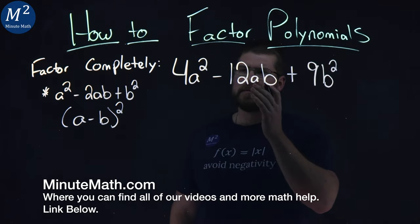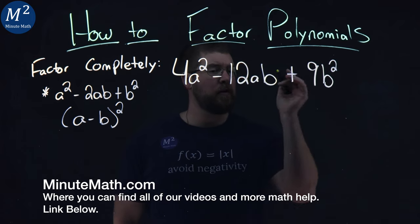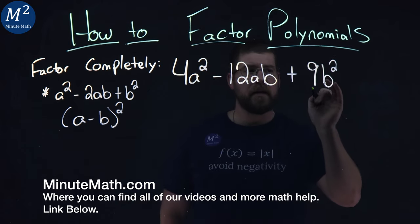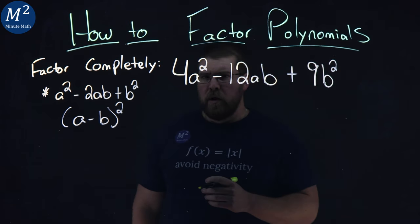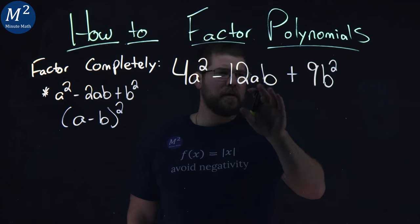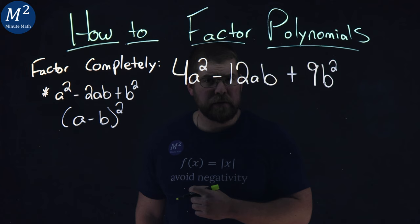We're given this tricky polynomial. We want to factor 4a² - 12ab + 9b². Now, one thing that's tricky looking through this, I don't see a common factor in every single part.